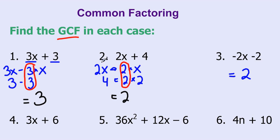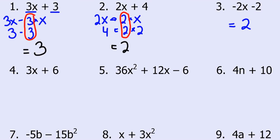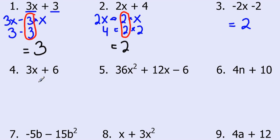There's definitely not an x in both terms, so that's not a common factor. Looking at the next one, 3x plus 6: we've got a 3 in this one, and I know there's a 3 hidden in that 6 somewhere. So the greatest common factor is 3.